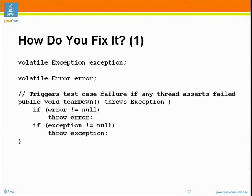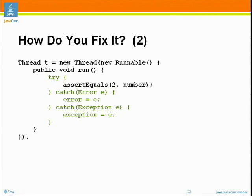In the teardown method for the test, we'll check if either of those are non-null. Basically, all the threads we start — if an exception occurs, they'll store it into those fields. The teardown method will check whether an error or exception was thrown by any of the threads we started. In each individual test method, in the run method, we need to catch any exceptions that occur and store them so that when the main thread calls the teardown method, these exceptions will wind up being propagated into that thread. Therefore JUnit will see it and it will get reported.